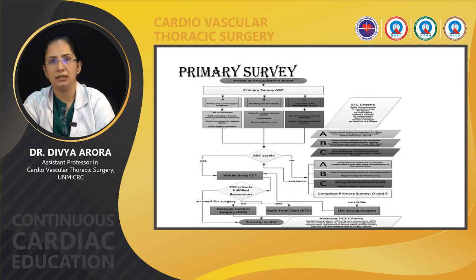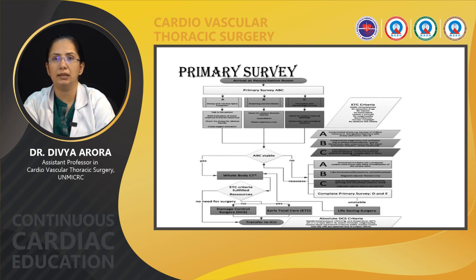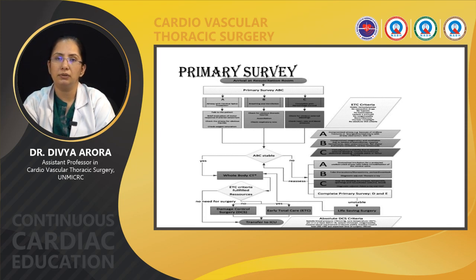As soon as our patient arrives in the emergency, there is a basic protocol called ATLS guidelines according to which we review our patient — the primary survey. The primary survey includes ABC: airway, breathing, and circulation. If all these factors are stable, then we can take the patient for CT scan. And if he fulfills the ETC criteria — stable hemodynamics, no vasopressors, lactate less than 2, adequate breathing and pressures — then we can shift the patient to ICU for early total care.